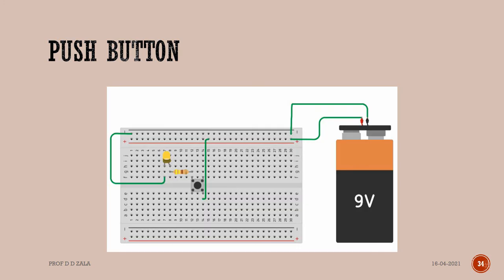As there are four legs on the push button, the circuit can be built another way as well. Instead of using leg B of the push button, we are going to use leg D. Since they are internally connected to each other, the LED glows when the push button is pressed.